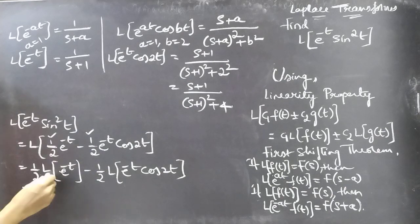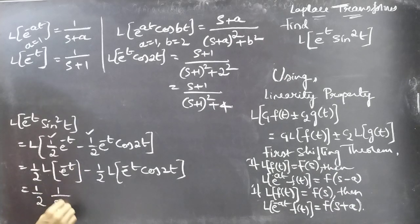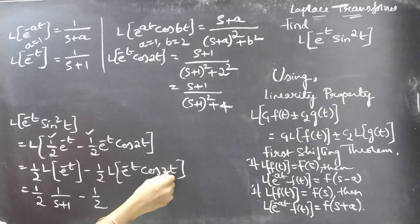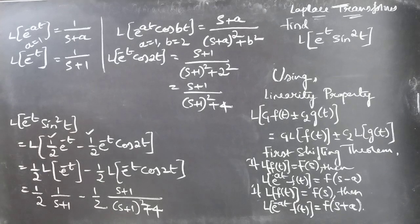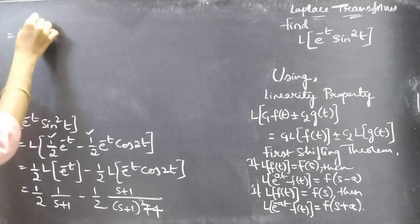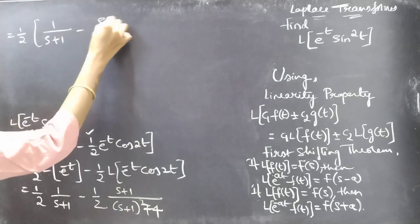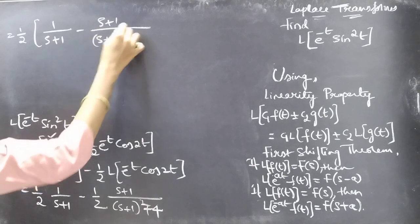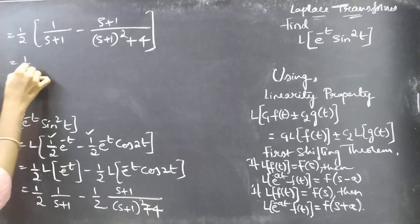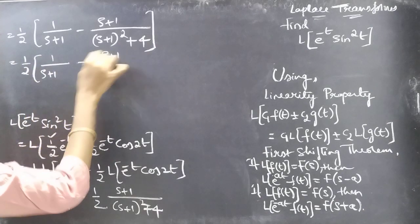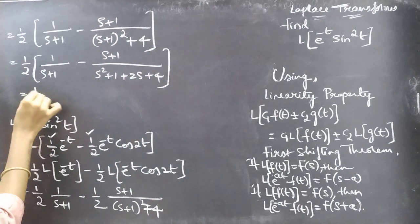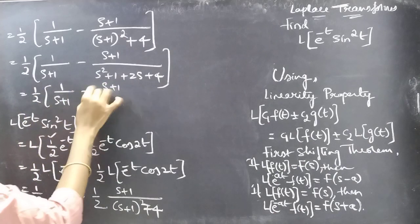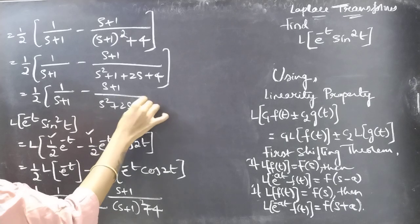Now coming to the problem. L of e to the power minus t is 1 by s plus 1, and L of e to the power minus t cos 2t is s plus 1 by (s plus 1) squared plus 4. Now take 1 by 2 common and simplify. This becomes 1 by 2 into 1 by s plus 1 minus s plus 1 by (s plus 1) squared plus 4.